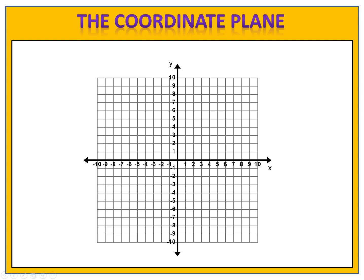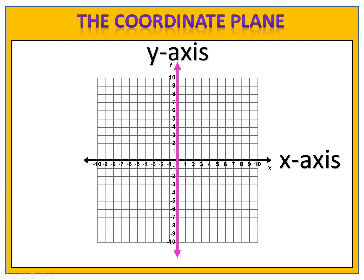The coordinate plane consists of an x-axis, which is horizontal, and a y-axis, which is vertical. The x and y-axis break the grid into four pieces, known as quadrants.